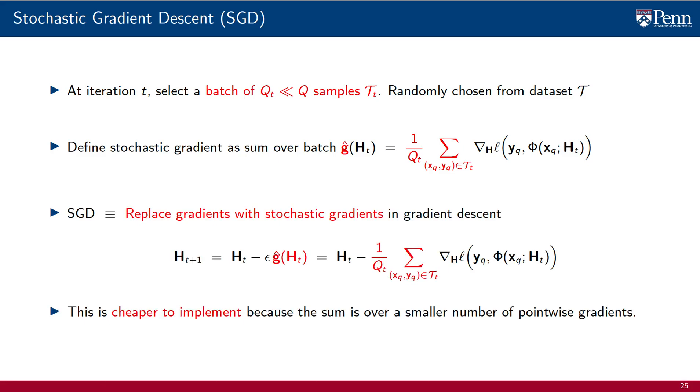Setting aside these differences for a second, we can think of replacing stochastic gradients for the gradients used in gradient descent. Doing that yields the stochastic gradient descent algorithm. Updates of parameters follow the stochastic gradient hat g, or equivalently, they follow the average of the pointwise gradients over the batch set. SGD is cheaper to implement because the average is over a smaller number of pointwise gradients, and it is not difficult to see that it will retain the descent property of gradients in some form.